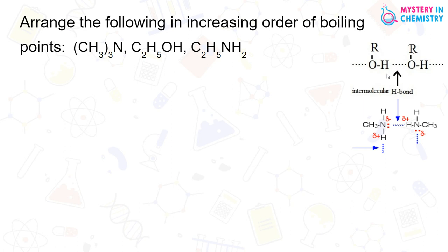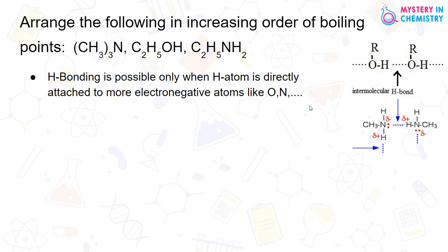What is hydrogen bonding? It is only possible - intermolecular hydrogen bonding is only possible when hydrogen atom is directly attached to more electronegative elements like oxygen or nitrogen.